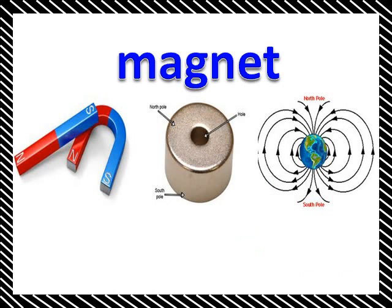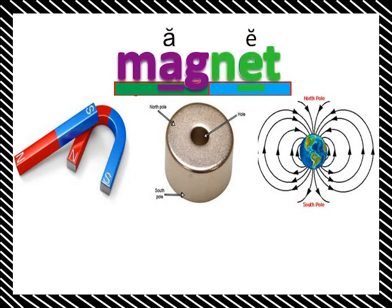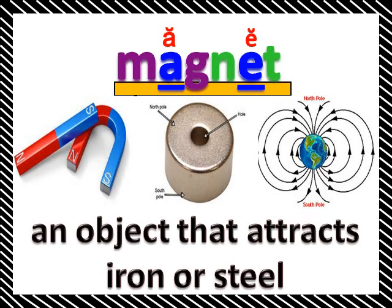Magnet. M-A-G-N-E-T. Magnet. A magnet is an object that attracts iron or steel.